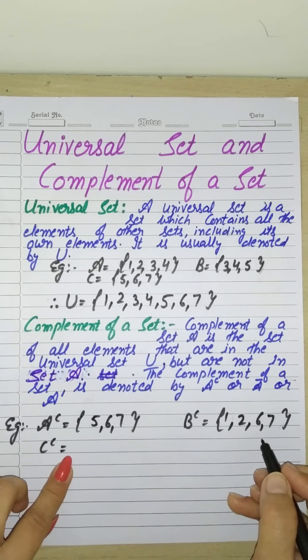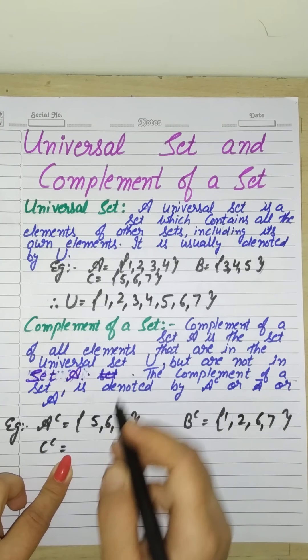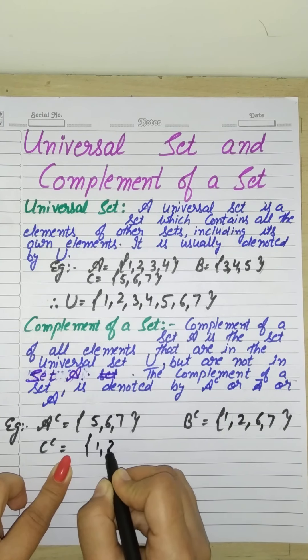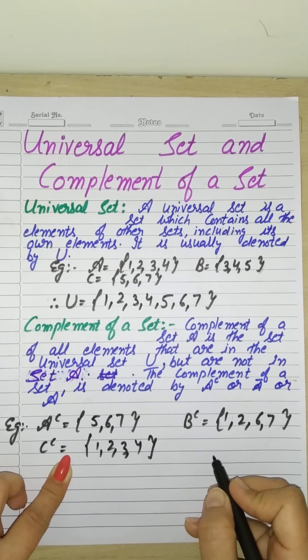If you want to find C's complement, C has 6, 7, so we exclude those. The remaining elements are 1, 2, 3, 4, 5. These elements will come, okay?